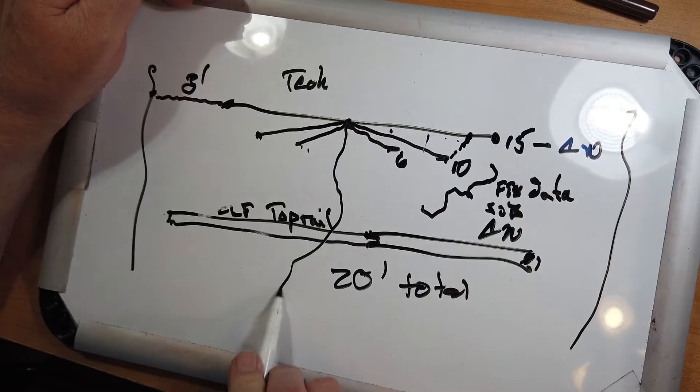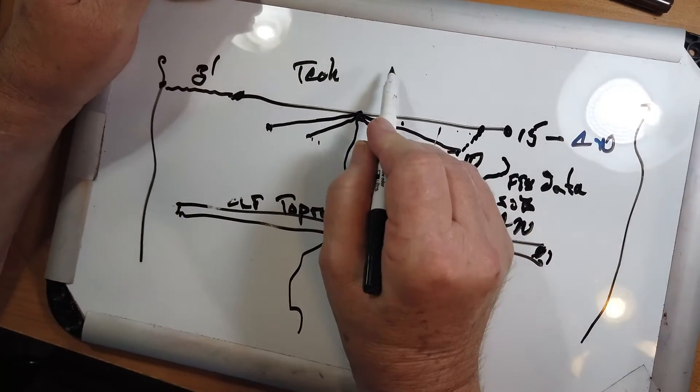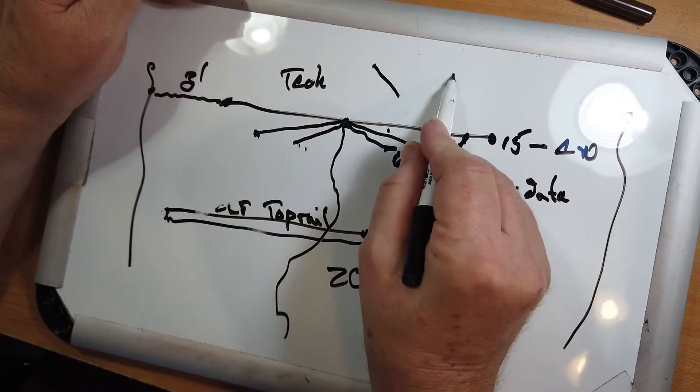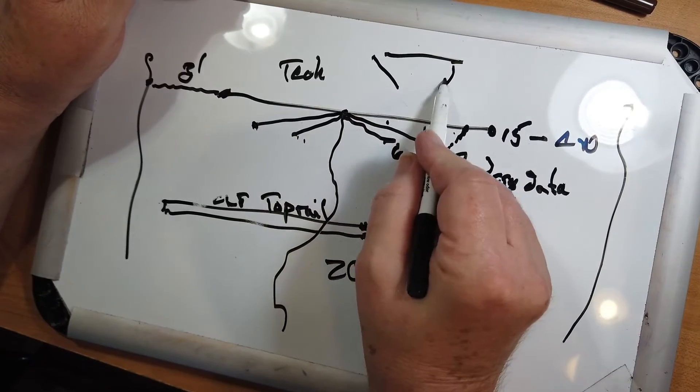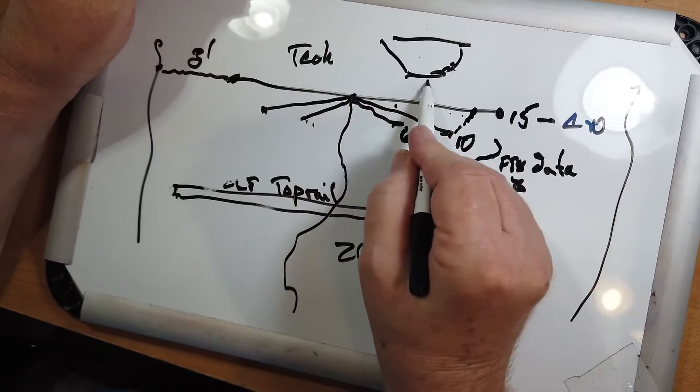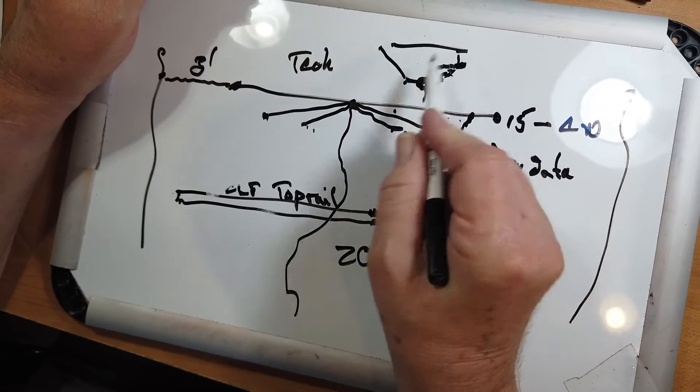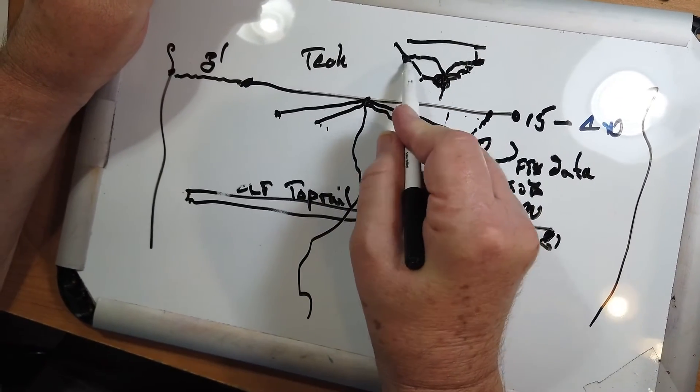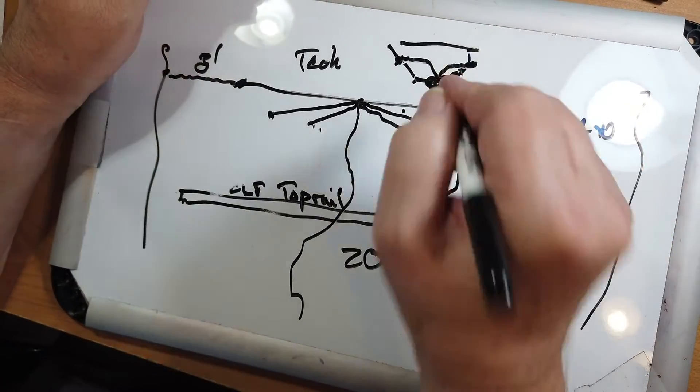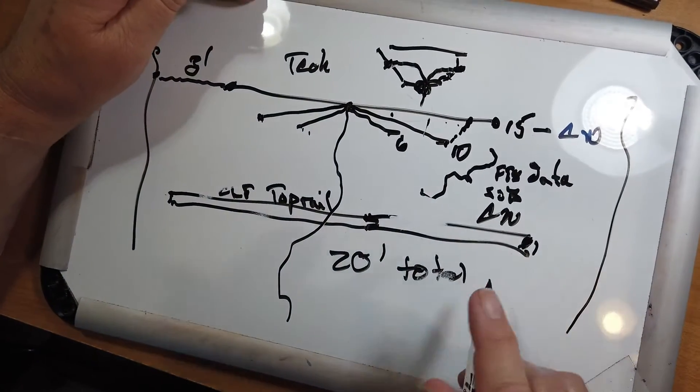And then, of course, you've got the coax coming down like this. Now, if it's an alpha-delta, and that little thing you called the cobra head, the wire comes in here, the center goes over here, and the shield goes over here. There's no balun.